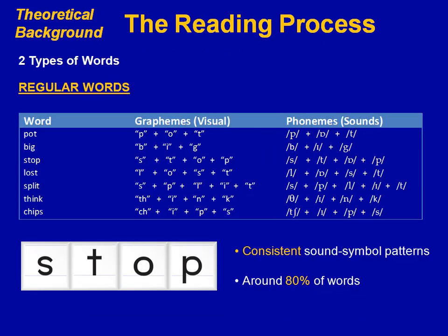English has two types of words. Regular words have consistent sound-symbol patterns. So for example, in the word 'stop', every letter represents an individual sound in the word. About 80% of our words are regular in this way.